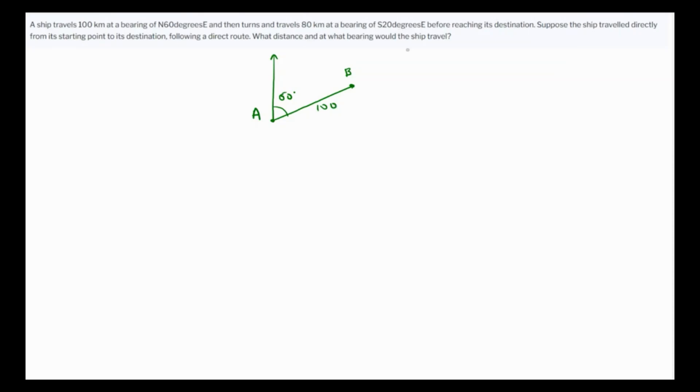Now it travels 80 kilometers at a bearing of 20 degrees east of south. This is south, and 20 degrees east is towards this direction. This is 20 degrees, and it travels 80 kilometers to reach C. The starting and endpoint are A and C, so if it takes a direct route, what is the distance of AC and the bearing of AC?